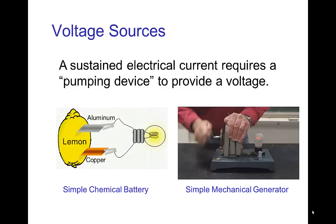In order to have a sustained electrical current, we need to have some way of pumping it, which means we need to provide some voltage so that the charges are pushed from one place to another. If this was water going through plumbing, we would need some pump to keep the water moving. With electricity, we need some similar device that is providing that energy.